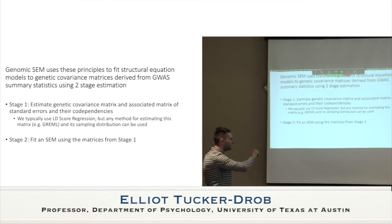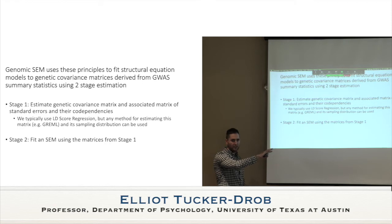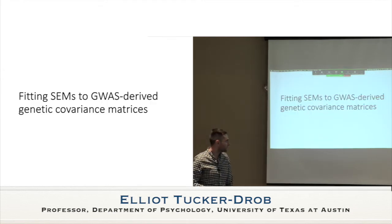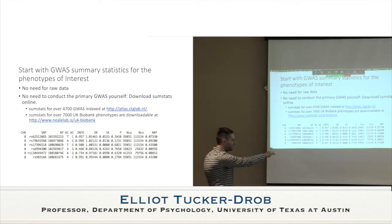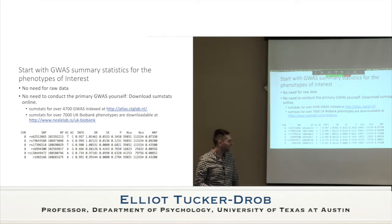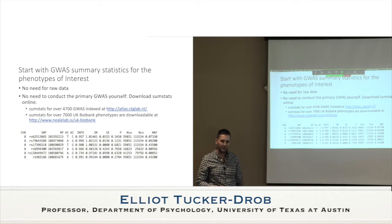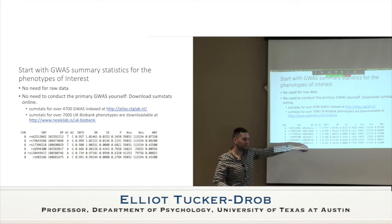Once we have those two matrices, we specify the structural equation model, optimize it to the stage-one matrix, and obtain the parameter estimates and their standard errors. You start with GWAS summary statistics — SNP ID, effect allele, effect size (often an odds ratio for case-control traits), standard error, sample size, and minor allele frequency.